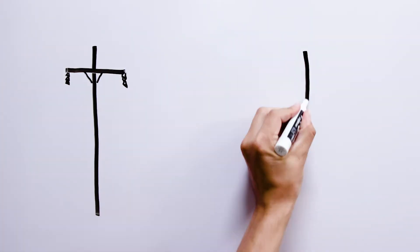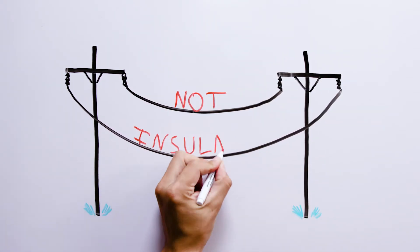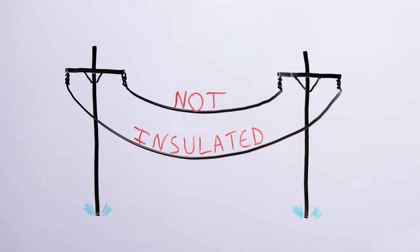Remember, distribution power lines are not insulated to protect you against contact. That's why property owners should never attempt to trim or remove trees from power lines.